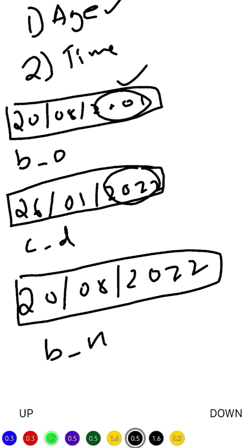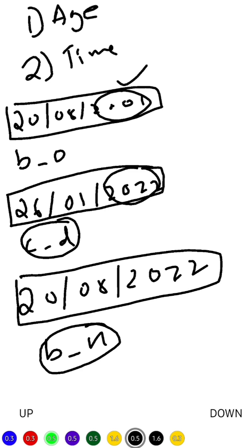If your birthday has not come, you subtract one; if it has come, you leave it as is. That solves the first question — what is your age. For the second question — how much time is left for your next birthday — you subtract birthday_new (bn) minus current_date (cd), and you directly get how many days are left.